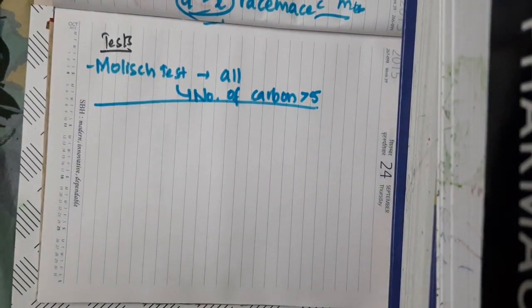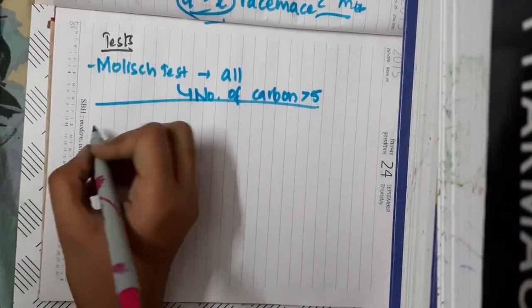Any carbohydrate with more than 5 carbons tests Molisch test positive.